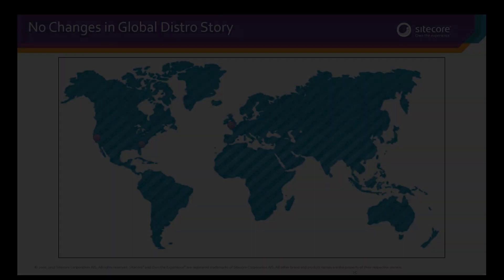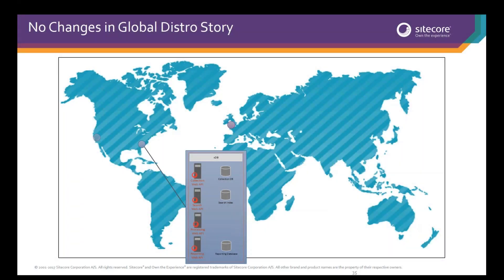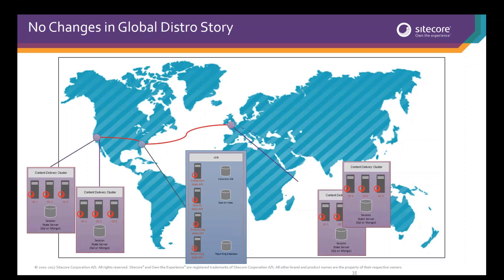There are no significant changes in the global distribution story — you still host XDB centrally in the world and have your content delivery environment call back to it. For customers in Australia who wanted to host XDB in Europe and load contacts locally, we've improved the API so you can load individual facets of contacts to reduce latency. There's also a configuration in the tracker — which is documented — that allows you to specify that only personal information and membership level facets are loaded by default when starting a new web session, rather than the whole contact record.